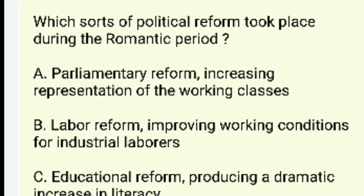Which sorts of political reform took place during the Romantic period — parliamentary reform, labor reform, educational reform, or A and C? The answer is D — both A and C (parliamentary reform and educational reform).